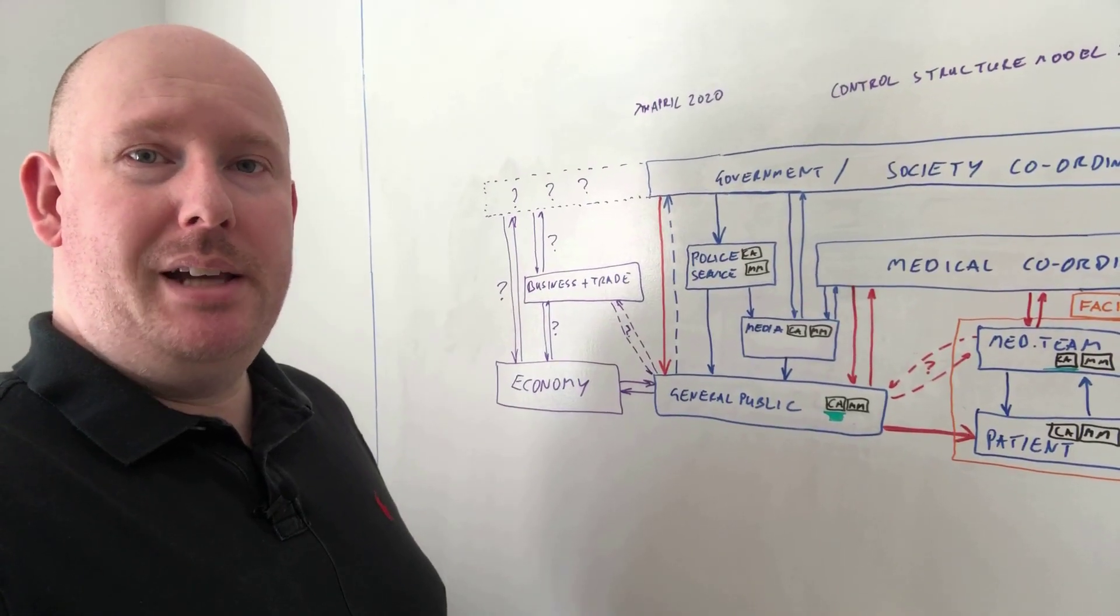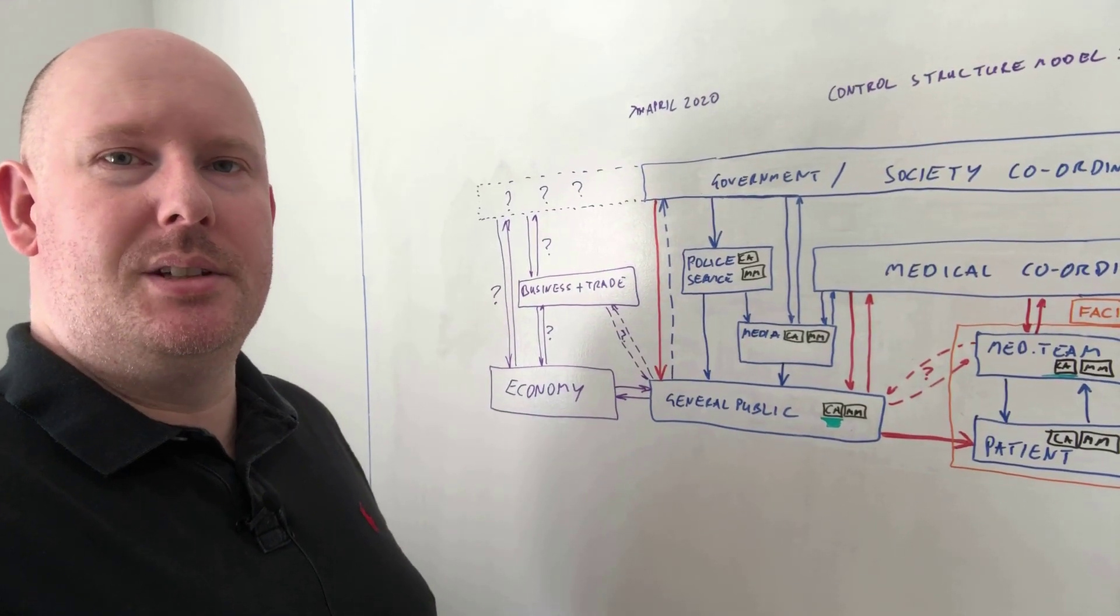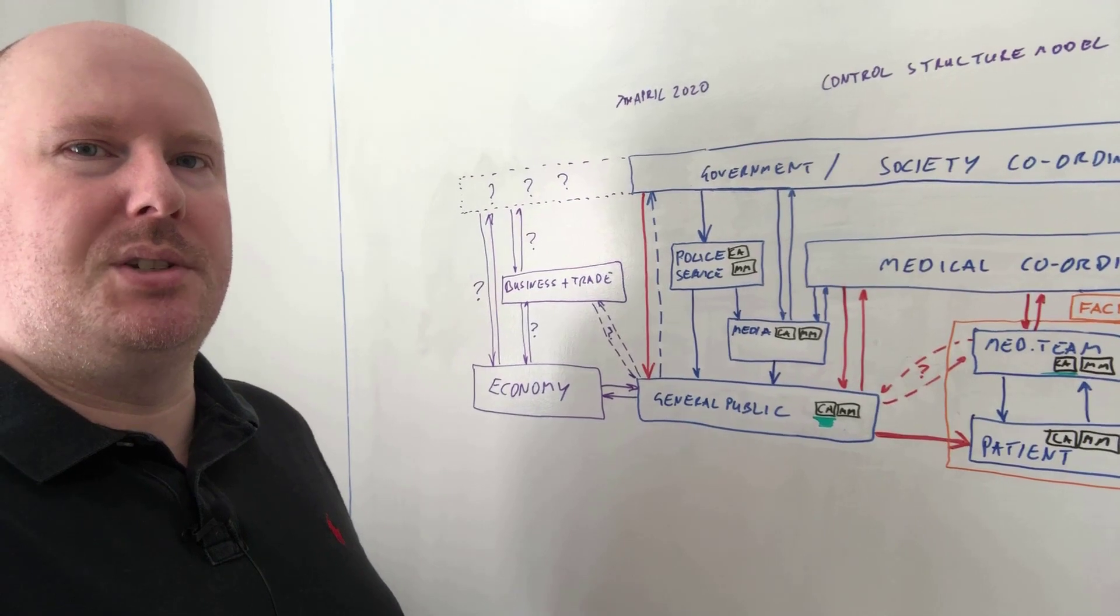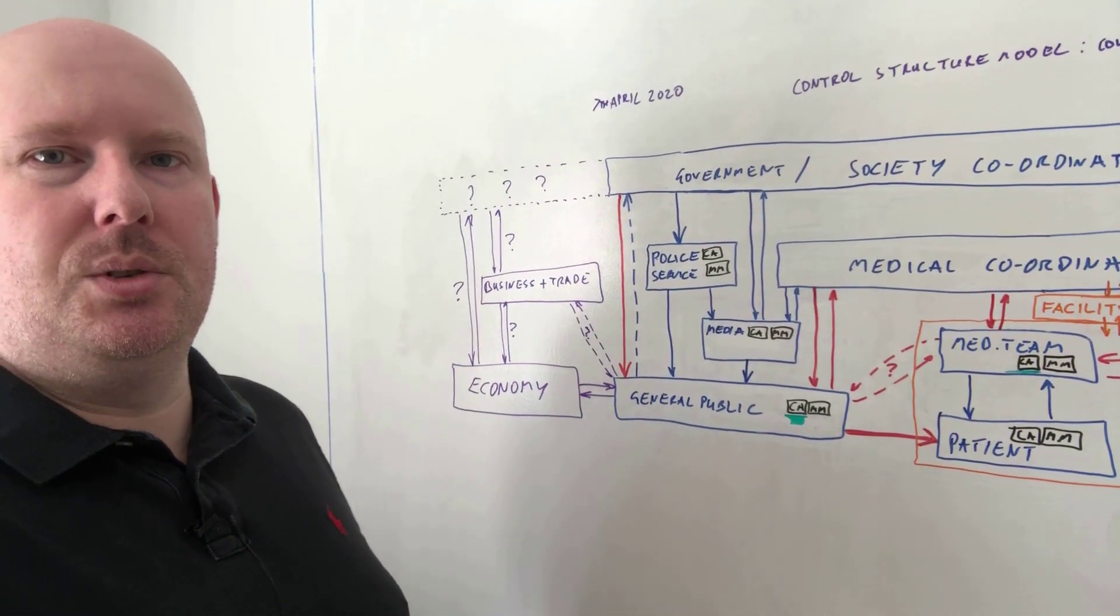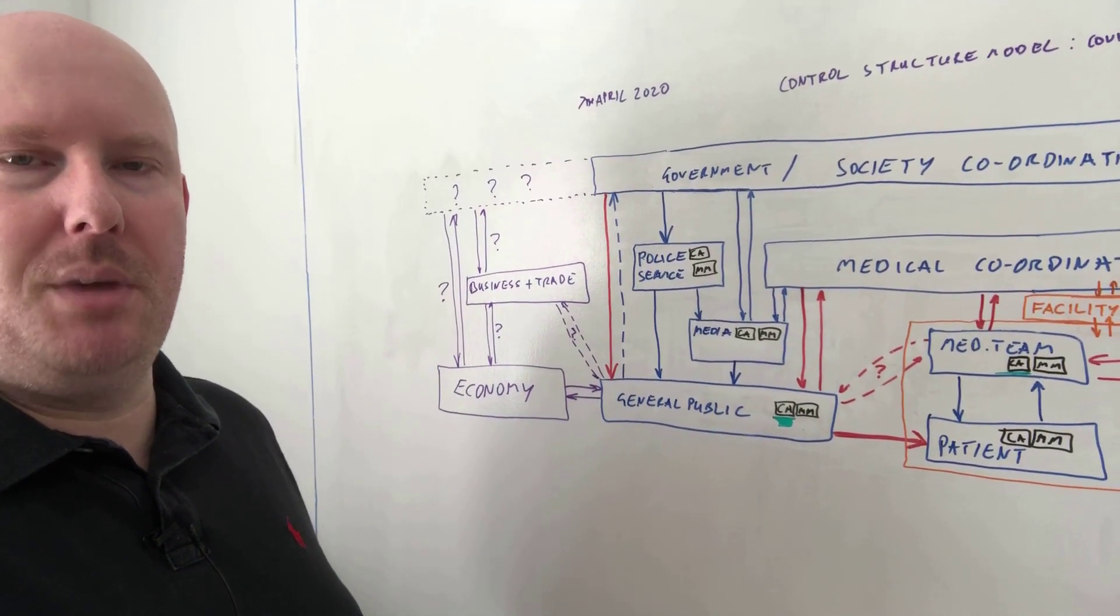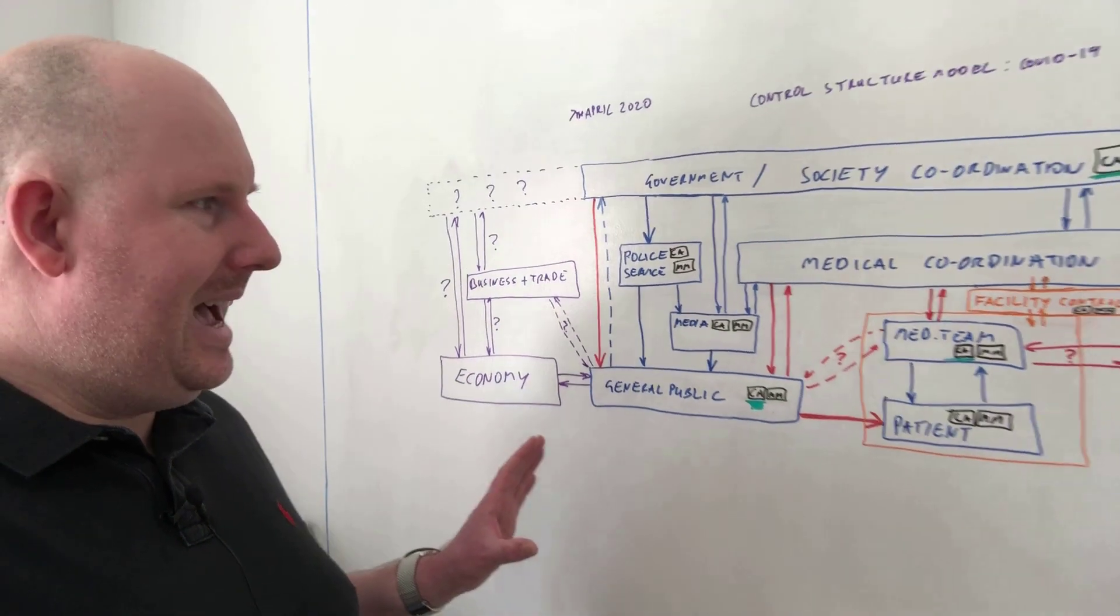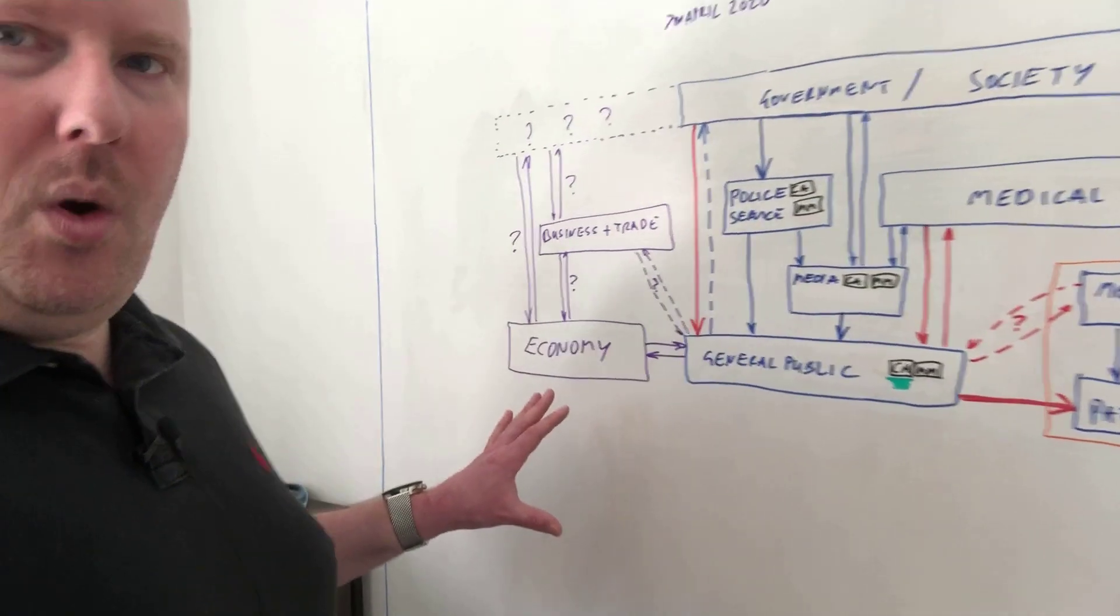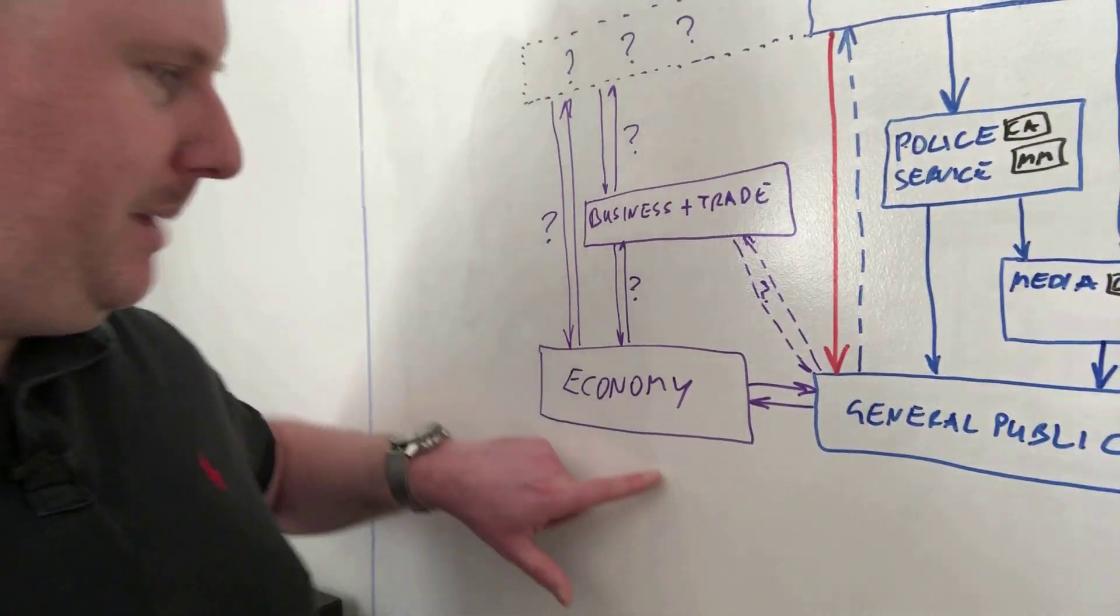Mike and David, you highlighted the economic impacts of keeping everybody locked down for such a considerable amount of time, especially with the financial issues that are going on in the world markets. So what I've done is I've added this to the control structure model. Literally just, what is the control process we're talking about?